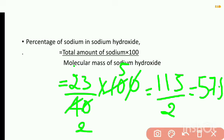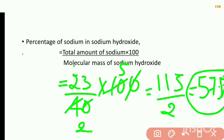The answer is 57.5 percent. So, 57.5% is the percentage of sodium in sodium hydroxide.